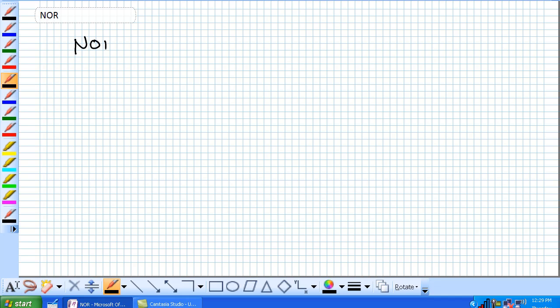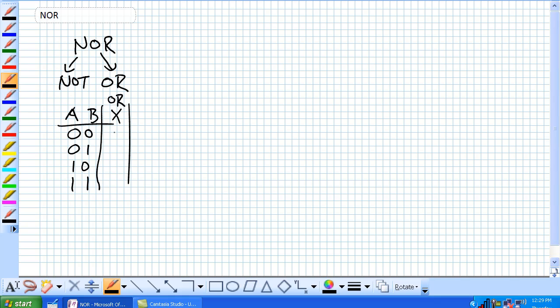The NOR is a contraction of NOT OR, so given our inputs A and B, we would expect our output X for an OR to be, here's our inputs, our OR is this way. A NOT OR would be the negation of that output.